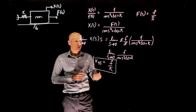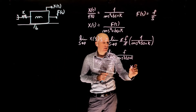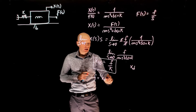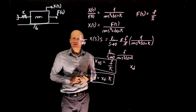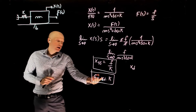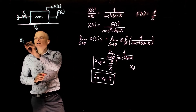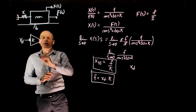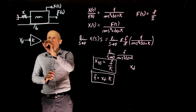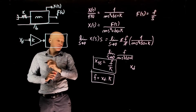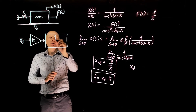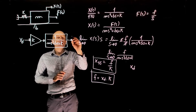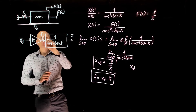If we want the mass to reach a desired position xd, we define the force to apply as xd times k. This gives us the open loop control approach: the input is the desired position xd multiplied by k — the stiffness constant — which serves as our control gain. This is applied to the plant 1 over ms² + bs + k, and the output is x.